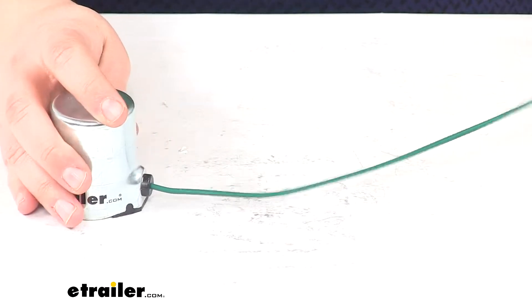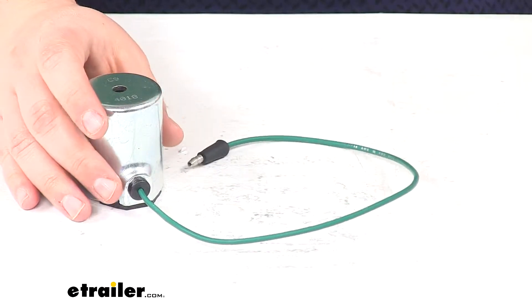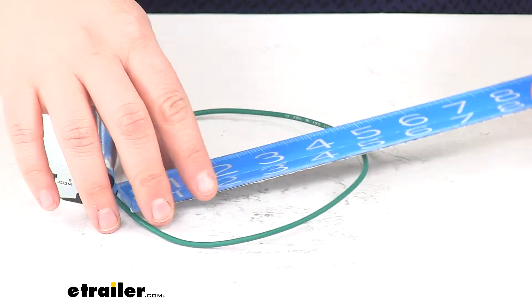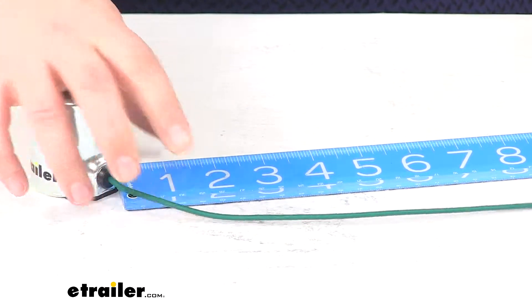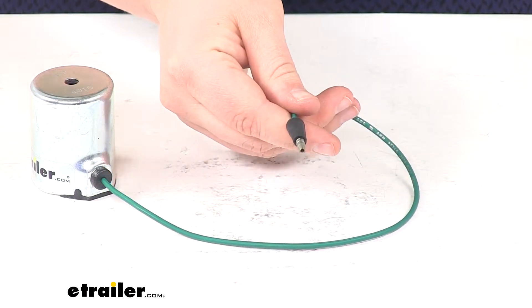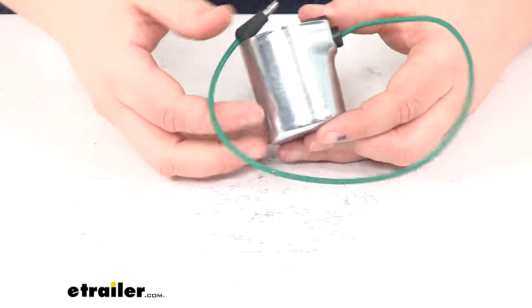We'll have our green cord coming off the back to connect. That cord is going to be about 13 and a half inches long with a male bullet end.